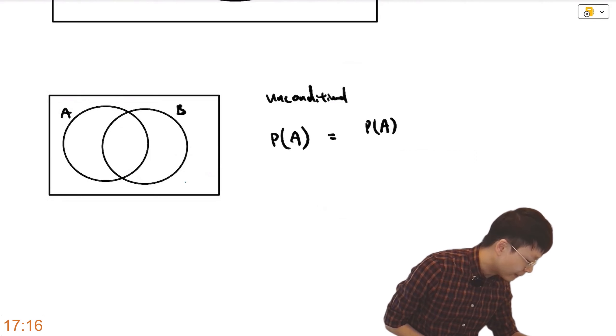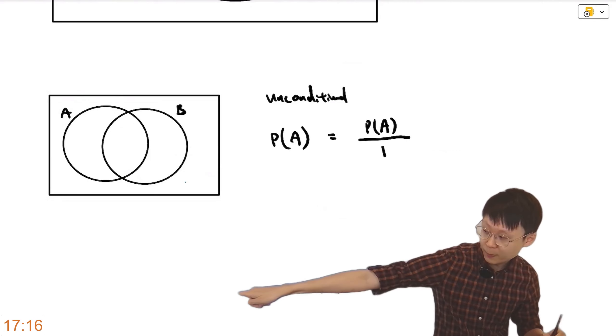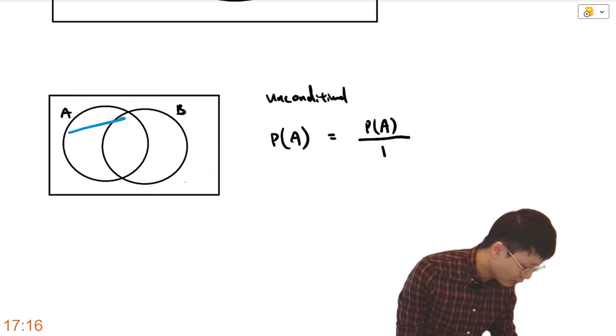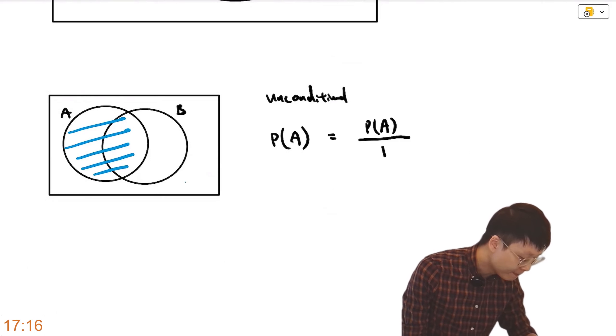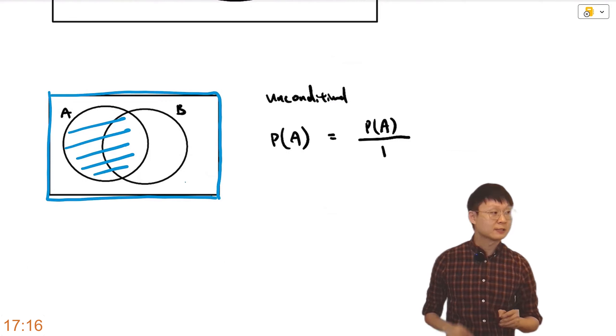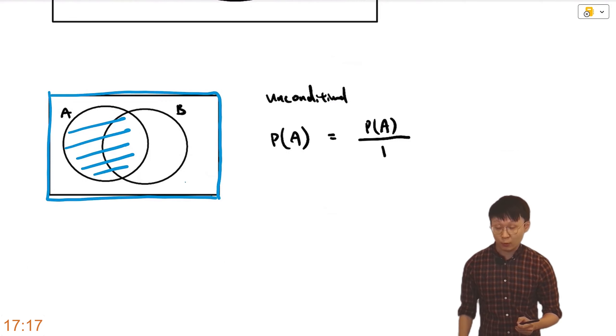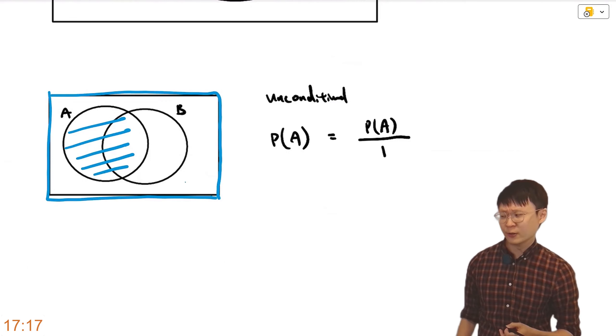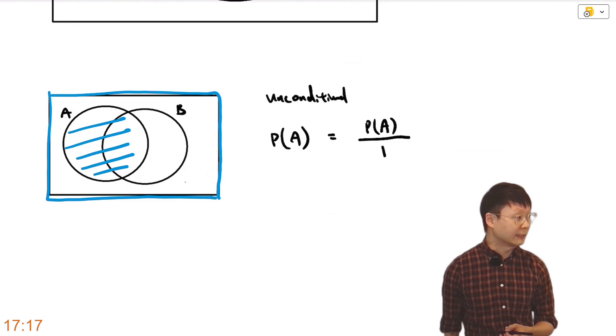This is chance of A happening divided by 100% universe, which means to say visualize A happening inside the 100% universe. Visualize the unconditional probability. Think of it as ratio of area divided by 100%. That is a probability. Unconditional.